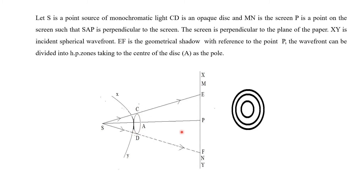Here, EF is the geometrical shadow with reference to the point P. We can see the shadow region, the spherical wavefront, and the diffracting screen. P is the center point of observation on the screen.